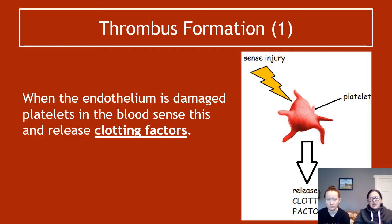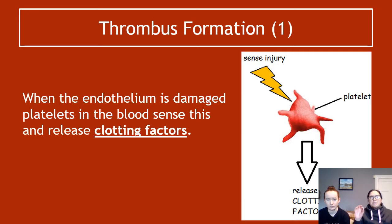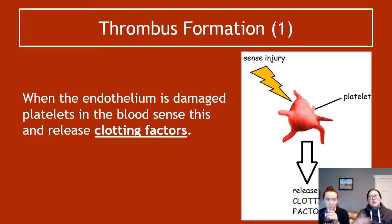Step number one of thrombus formation: when the endothelium is damaged, platelets in the blood can sense this and release clotting factors. For example, if you've got such a big atheroma that it causes endothelial damage, then platelets already floating inside the blood will detect this and release clotting factors.